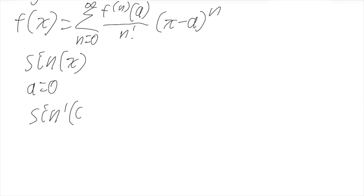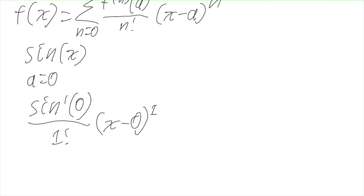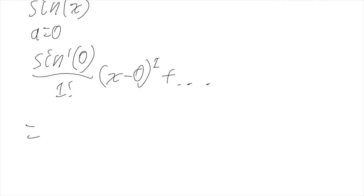After that we'll have the n equals one term: the first derivative of sine at zero over one factorial times (x minus zero) to the first power. And the first derivative of sine is cosine, and cosine of zero is one, and one over one factorial is one times x is just x.